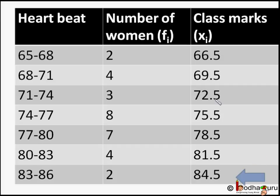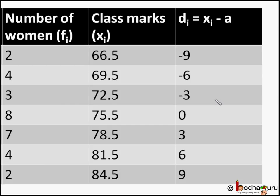Let us use the assumed mean method. There are seven classes, that is seven rows in the table. The fourth value is the median of the sorted list of these seven values, so we take the fourth class mark as the assumed mean a. That is, a = 75.5.